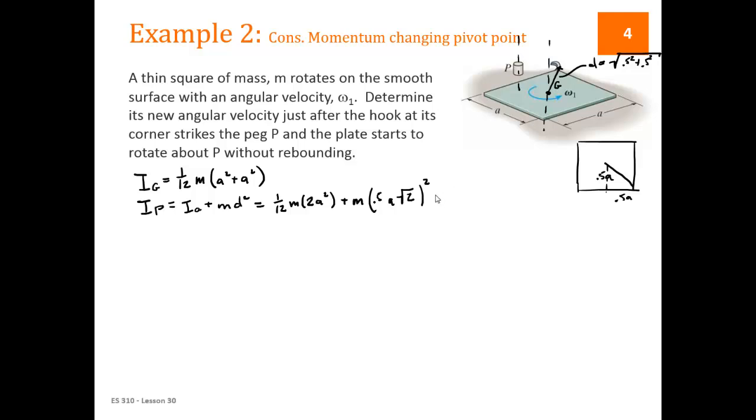So the side is one, so this is half of one, and this is half of one. So this then by Pythagorean theorem is the square root of 0.5 squared plus 0.5 squared. So if we plug in that, then we get one-twelfth mass times 2a squared plus mass times 0.5 square root of 2. This is 0.5a.